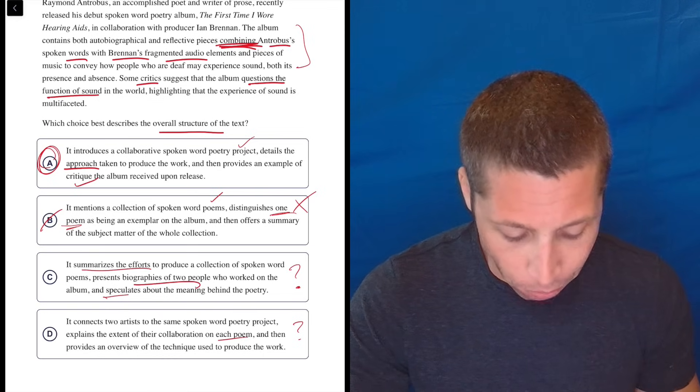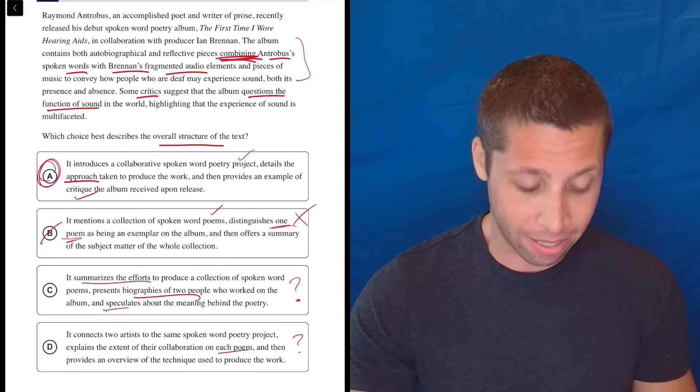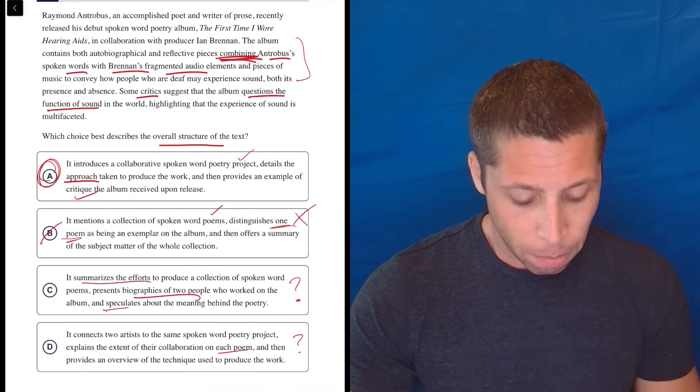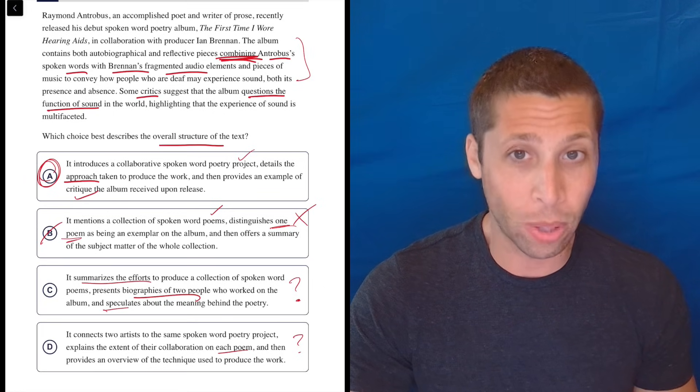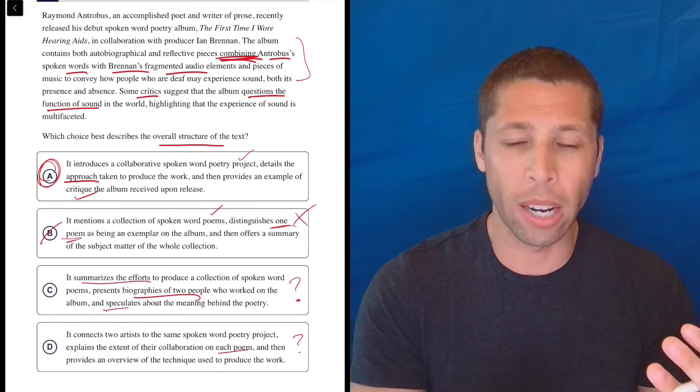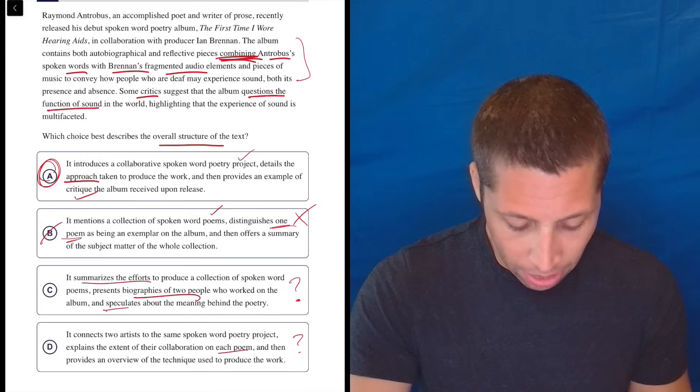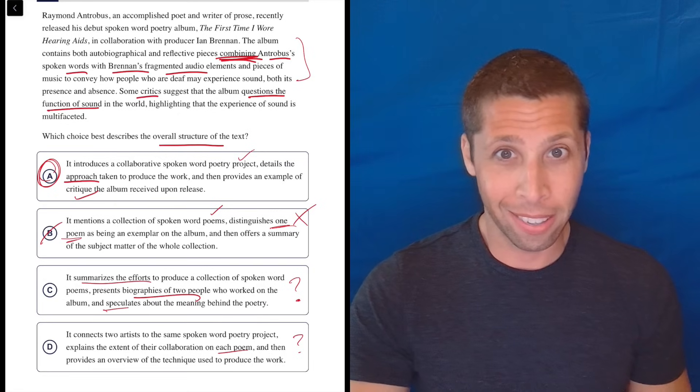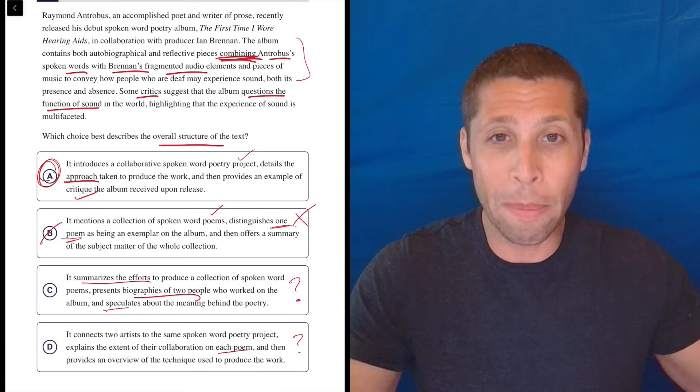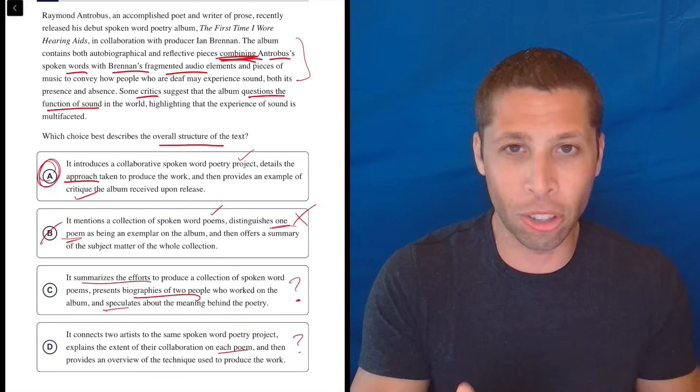So C, it summarizes the efforts to produce a collection of spoken word poems. I don't think it does, at least not at first. Maybe that's the second sentence there in the middle. But it's not summarizing the efforts in the first sentence. It's just kind of saying what they did, that they collaborated. I don't think that's talking about their efforts. I'd want to know maybe like how hard they worked, how long it took, what specific steps they did.